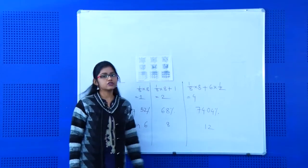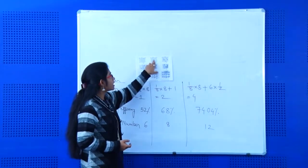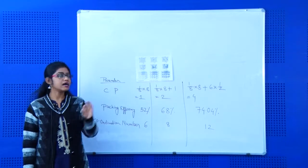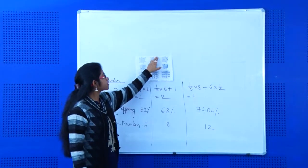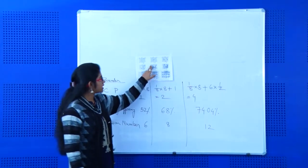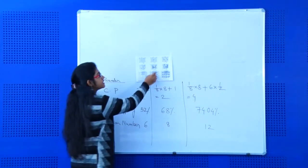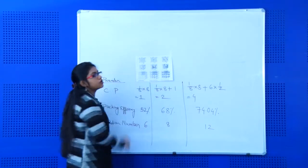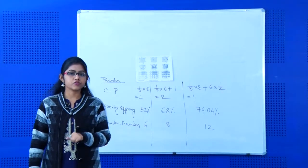The next one is body centered cubic. In the case of body centered cubic, one constituent particle will be inside the crystal and eight corners will contain eight constituent particles. In the cross-section view, the centered particle is there along with the eight corner constituent particles.